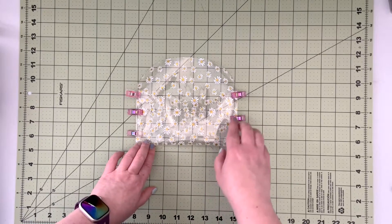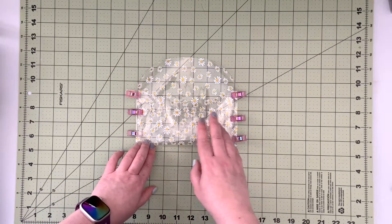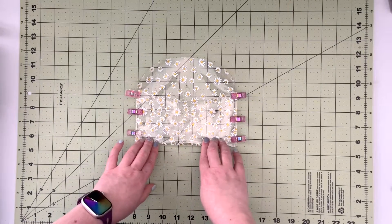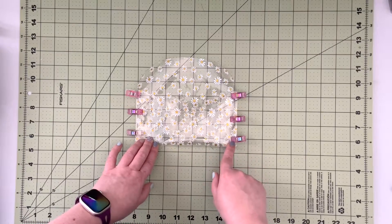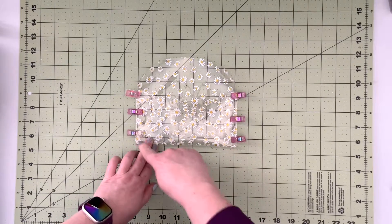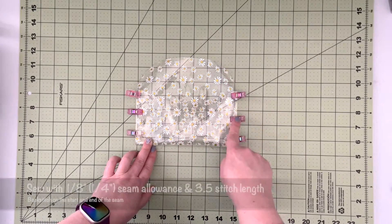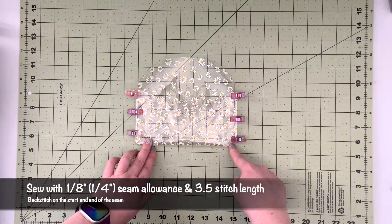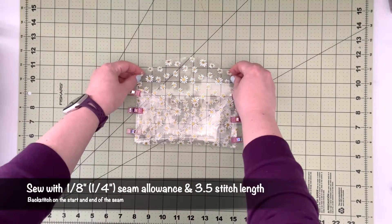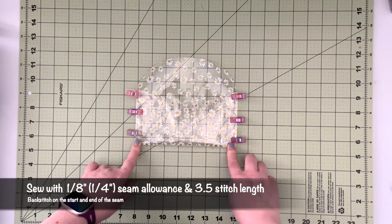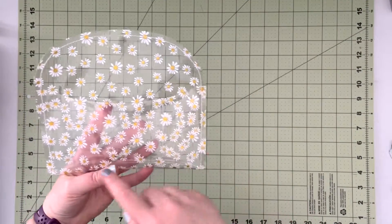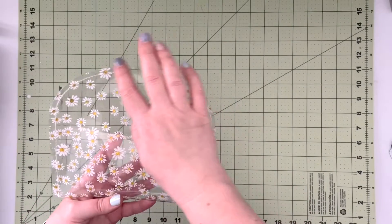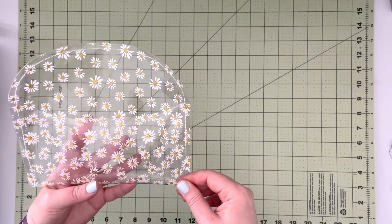If you want to trim the seam allowance after you sew it or embellish it with a scalloped edge, which is what I'm probably gonna do, I'm gonna increase my seam allowance to one fourth of an inch. So I'm gonna be sewing along this edge with one fourth of an inch seam allowance and 3.5 stitch length. And then I'm gonna trim my edge with my scalloped pinking shears. Now that I have my pouch sewn along this edge I'm gonna trim my seam allowance to give it a nice scalloped edge.